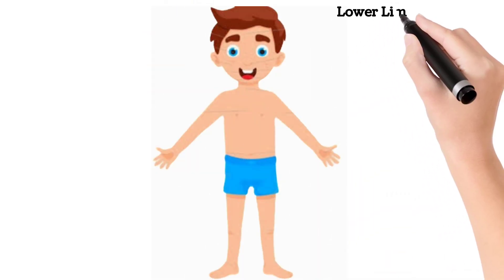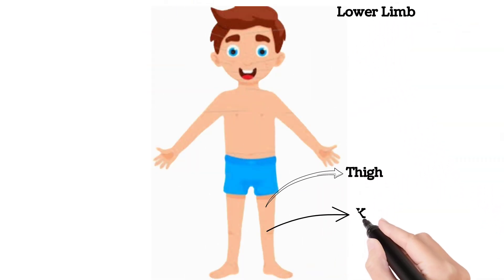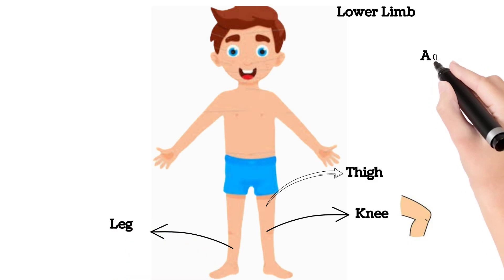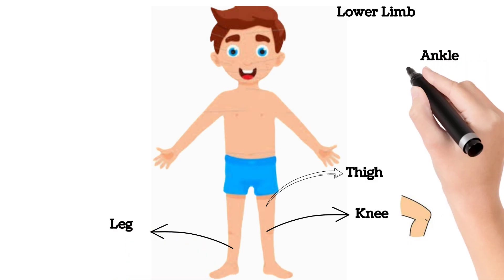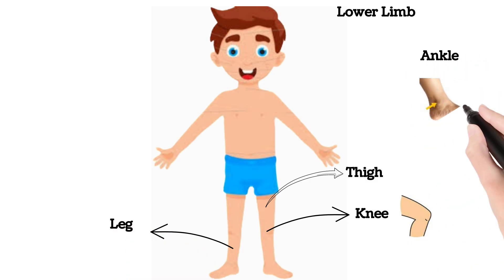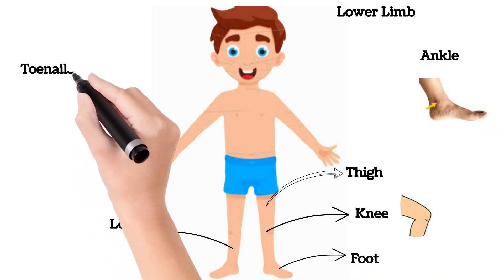Lower limb includes: Thigh. Knee. Leg. Ankle. Foot. Toenail.